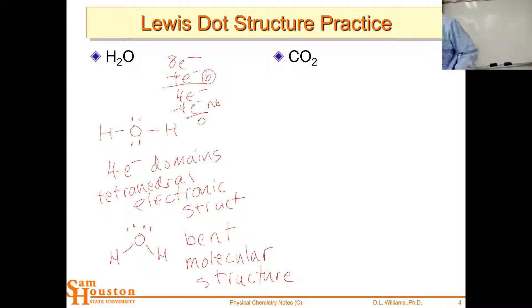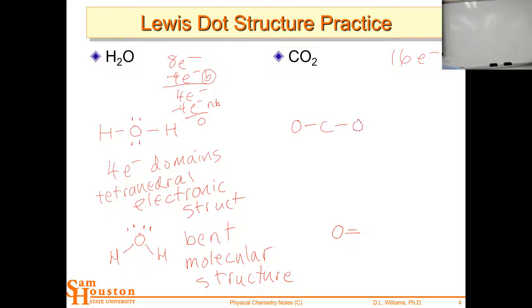Let's do the same thing for CO₂. Carbon has four electrons, two oxygens contribute twelve, so sixteen total. Form single bonds first — subtract four bonding electrons. We have twelve left, which we place as non-bonding electrons on the oxygens: twelve non-bonding electrons distributed on the two oxygen atoms.